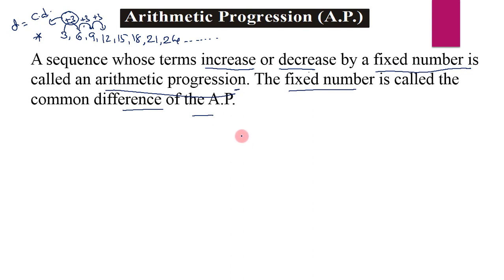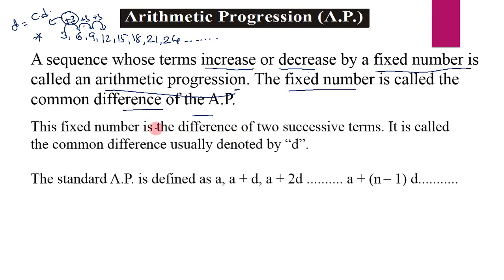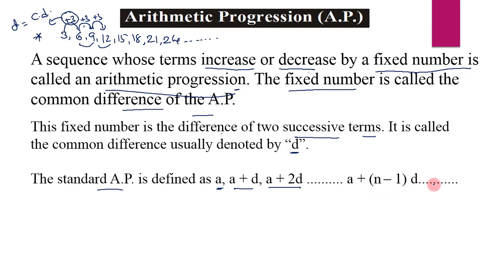I hope you understand the definition of arithmetic progression. The fixed number is the difference between two successive terms — in this example it is 3. In any AP, the difference between any two successive terms remains the same, which is why it is called the common difference, denoted by d. The standard form of an AP is: a, a+d, a+2d, ..., a+(n-1)d.